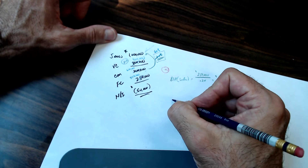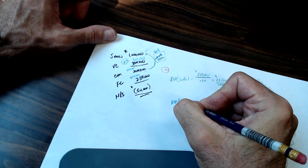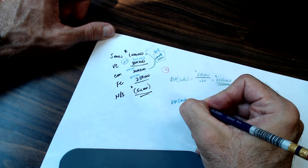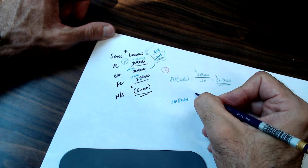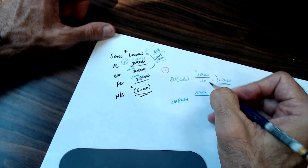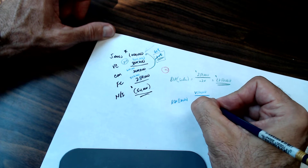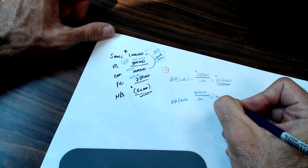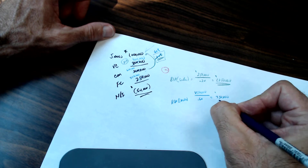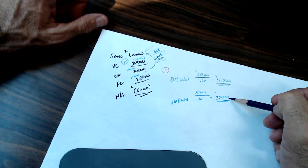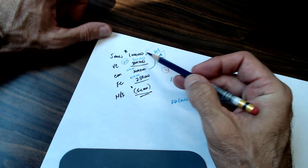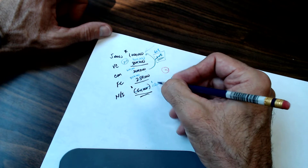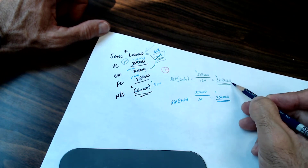So the new break-even point, given these changes: fixed costs of $450,000 divided by the new contribution margin ratio of 60% — that's $750,000. Wow. So at that level of sales I'd actually be making money. Notice that with $1,000,000 in sales I'd generate $150,000 in net income — quite a shift.